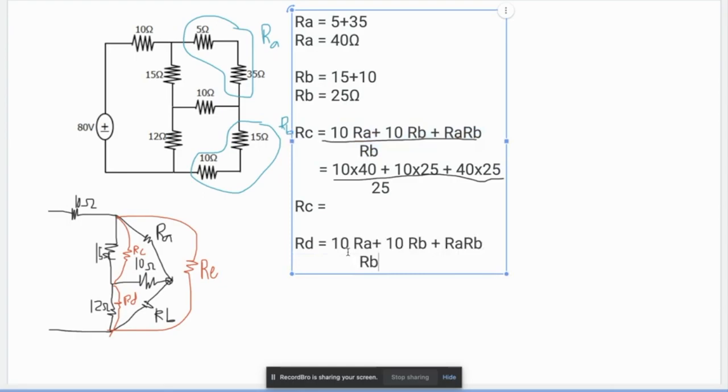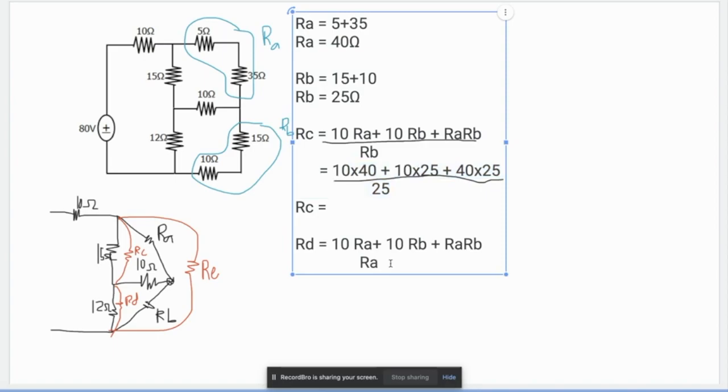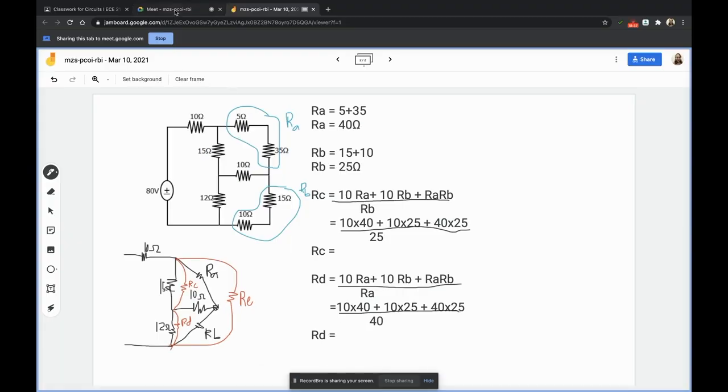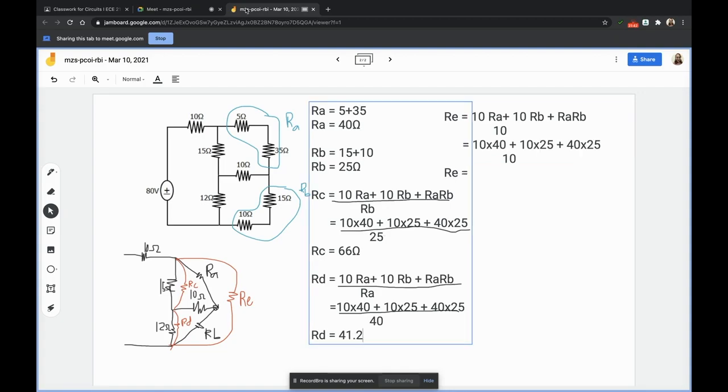And that will be equal to, when we want the Rd, but now the opposite of Rd will be Ra, so Ra. And this one will be equal to, Rc is 66 ohms, and this one will be equal to 40. And our Rt will be equal to, of course programming ulit natin to, and then our Rd into its denominator, pero the opposite of Ra is 10. And 2.25 ohms for Rd while this one is 165 ohms.